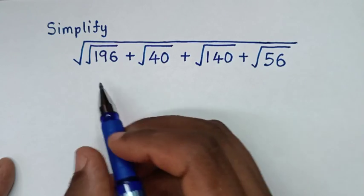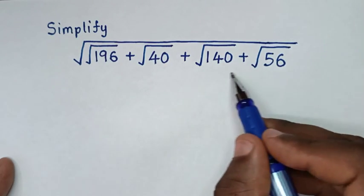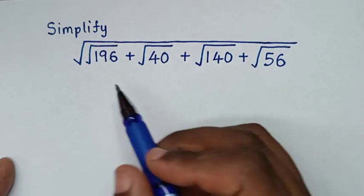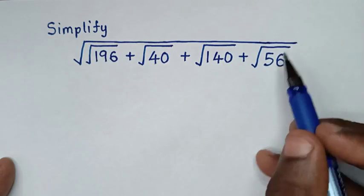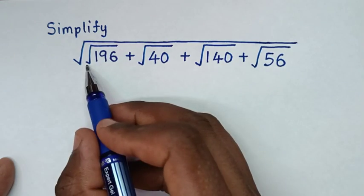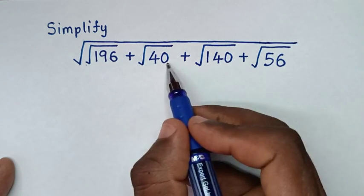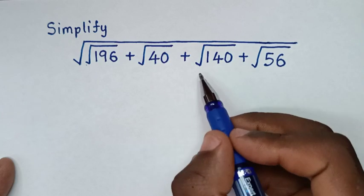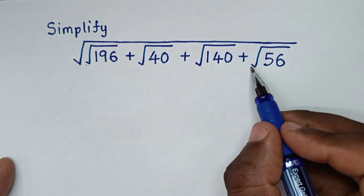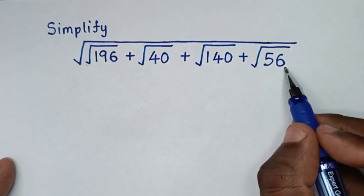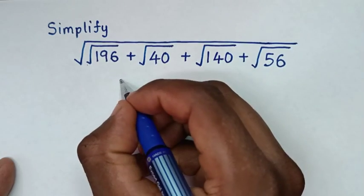Hello, you are welcome to solve this math problem: to simplify the square root of the quantity square root of 196 plus square root of 40 plus square root of 140 plus square root of 56.